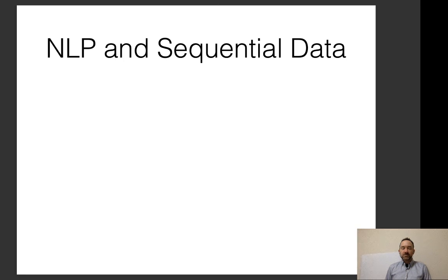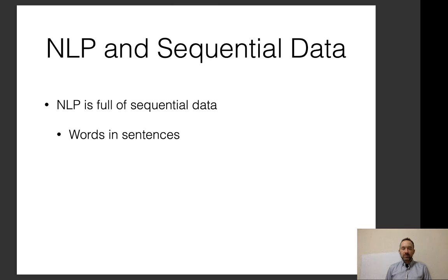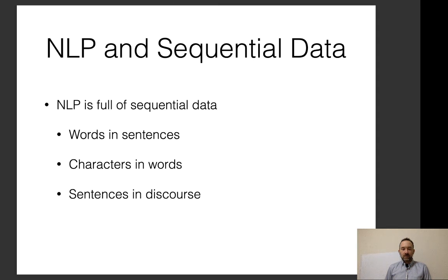One of the features of natural language processing is that we often have to deal with sequential data. There are lots of different varieties of this: words in sentences, where a sentence is a sequence of words; a word could be viewed as a sequence of characters; and a discourse could be viewed as a sequence of sentences. So we have lots of these sequences to handle, and many more.